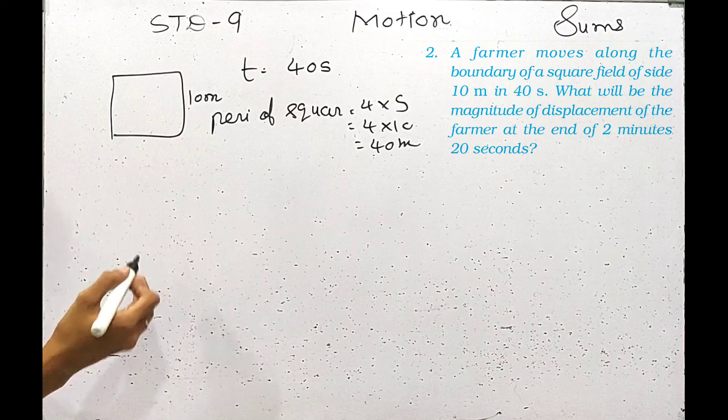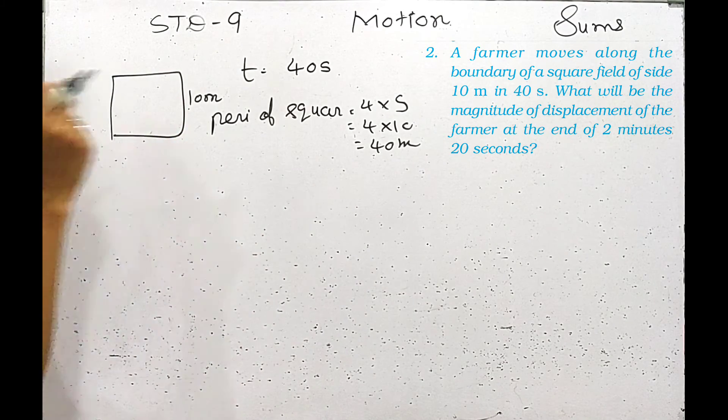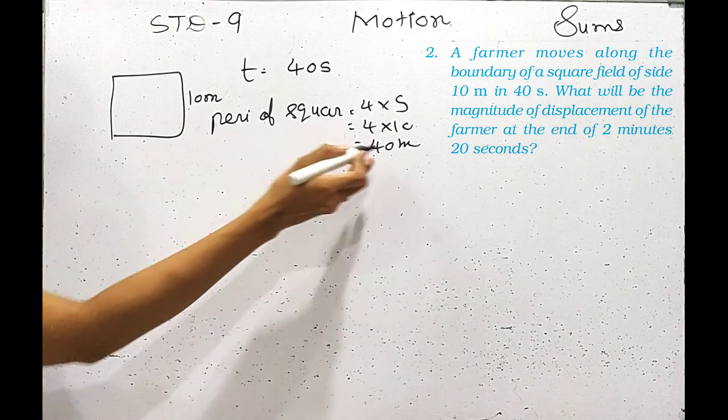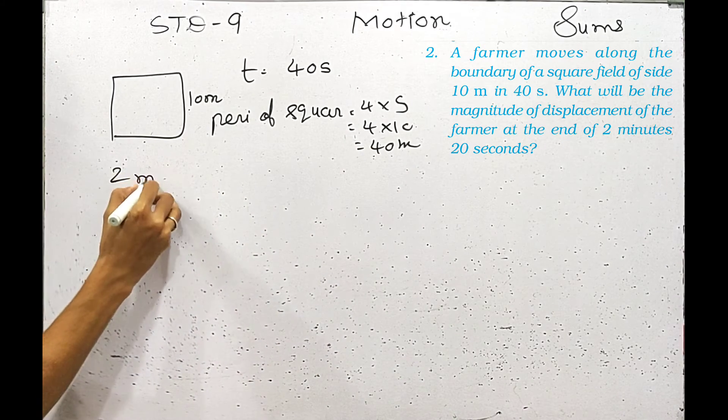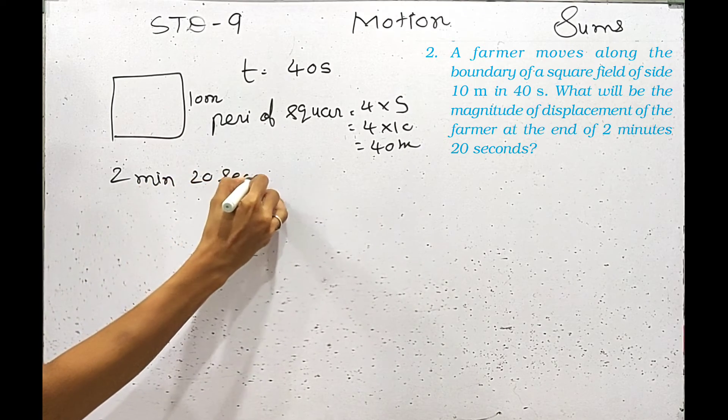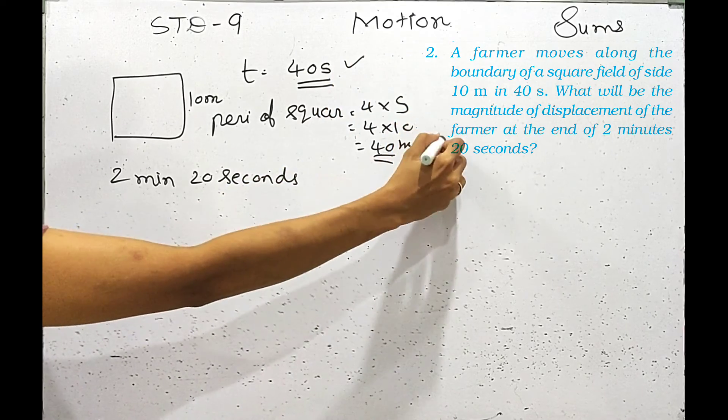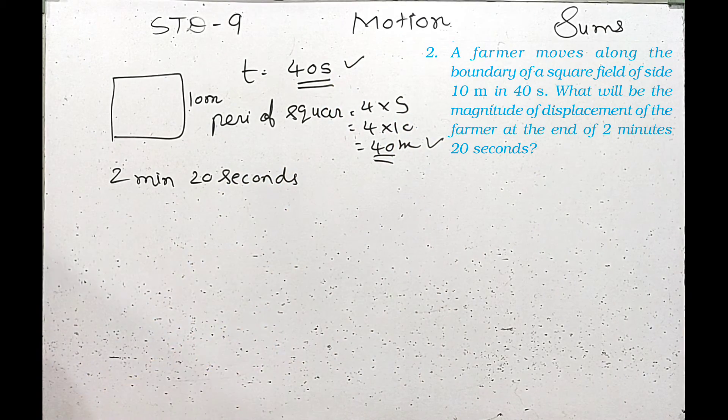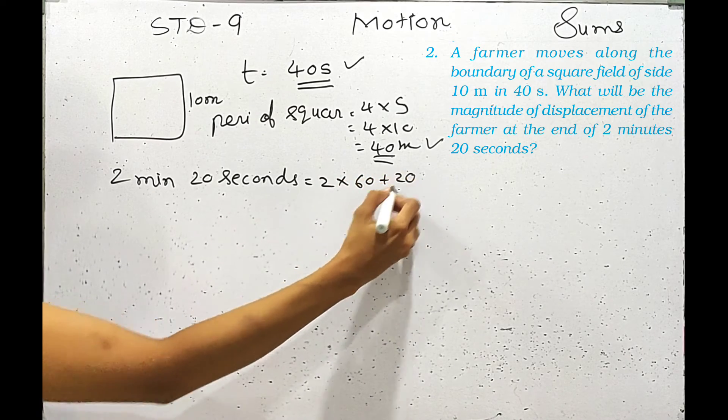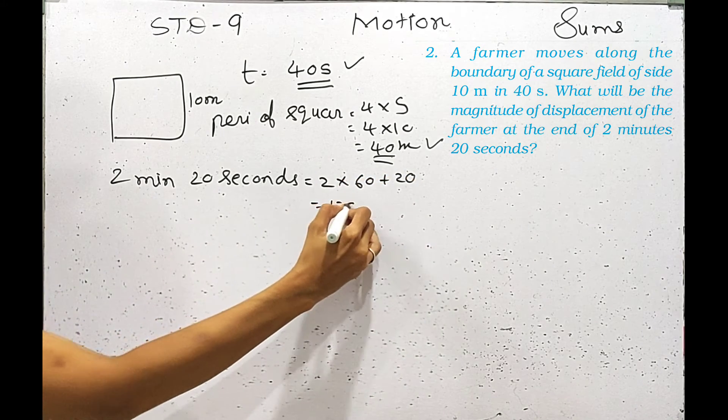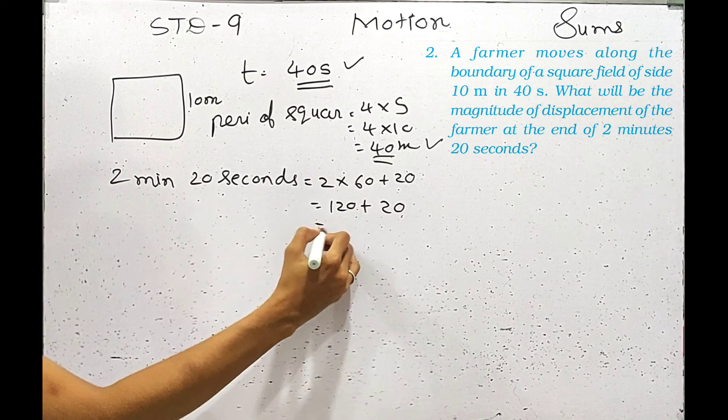Now I will find the distance. If in 40 seconds it covers the distance, I have another time that is 2 minutes and 20 seconds. First I will convert it to seconds because this is my unit in seconds. So this will be a total of 140 seconds.